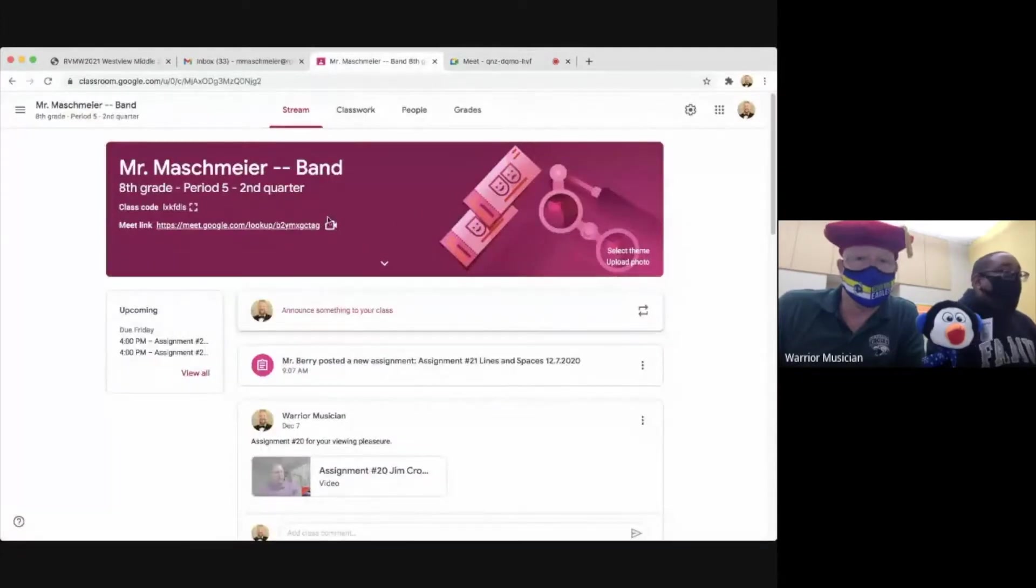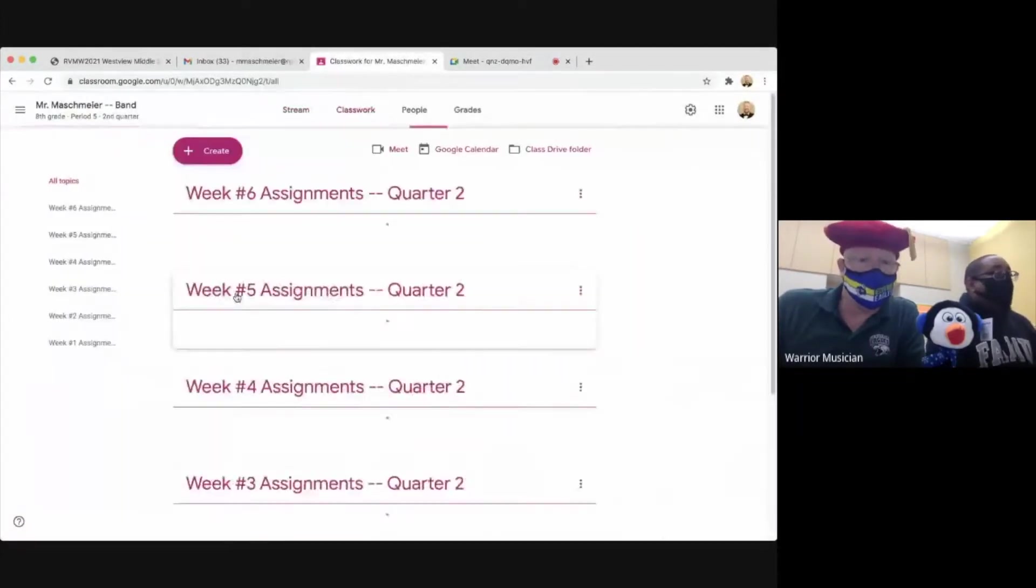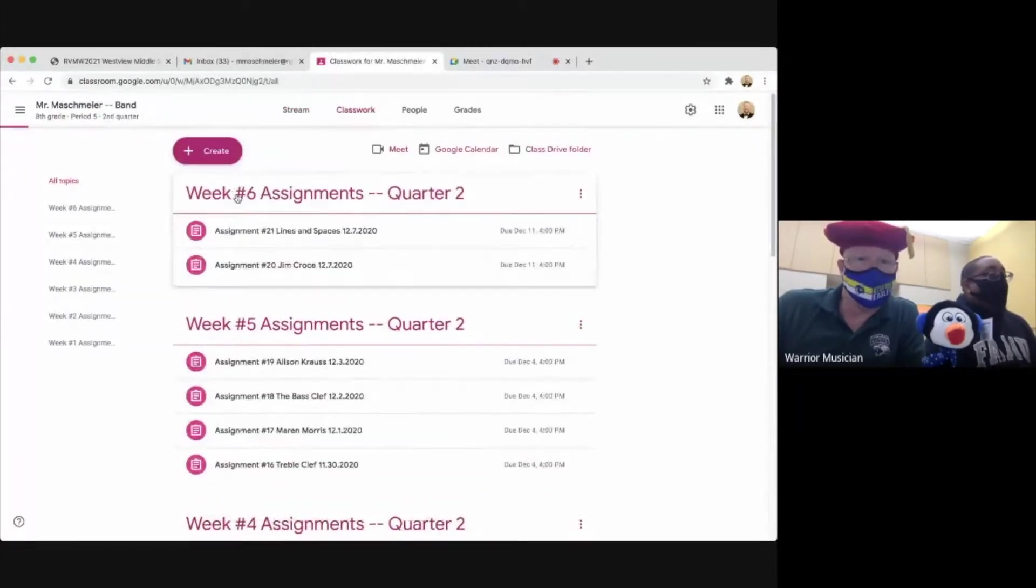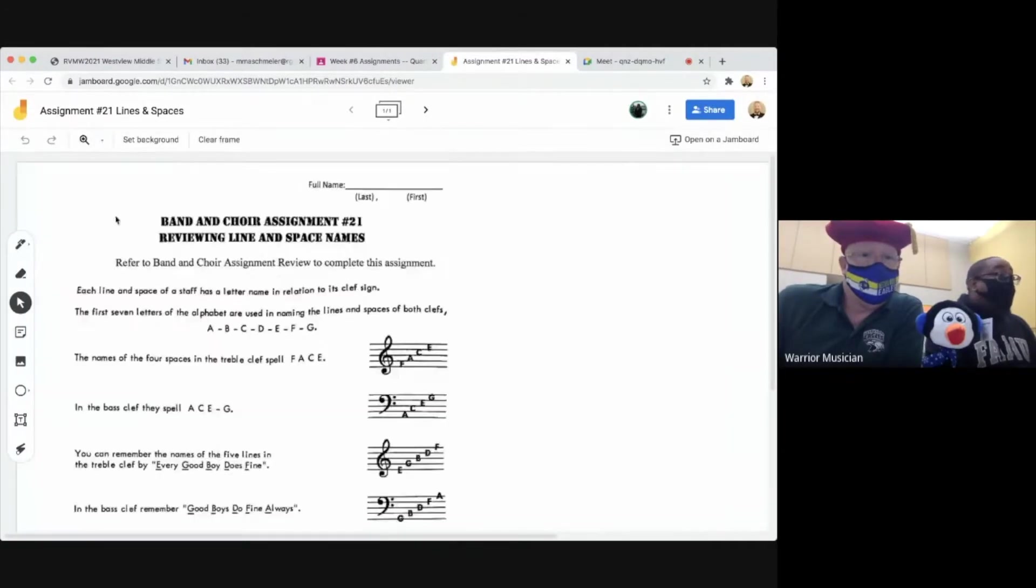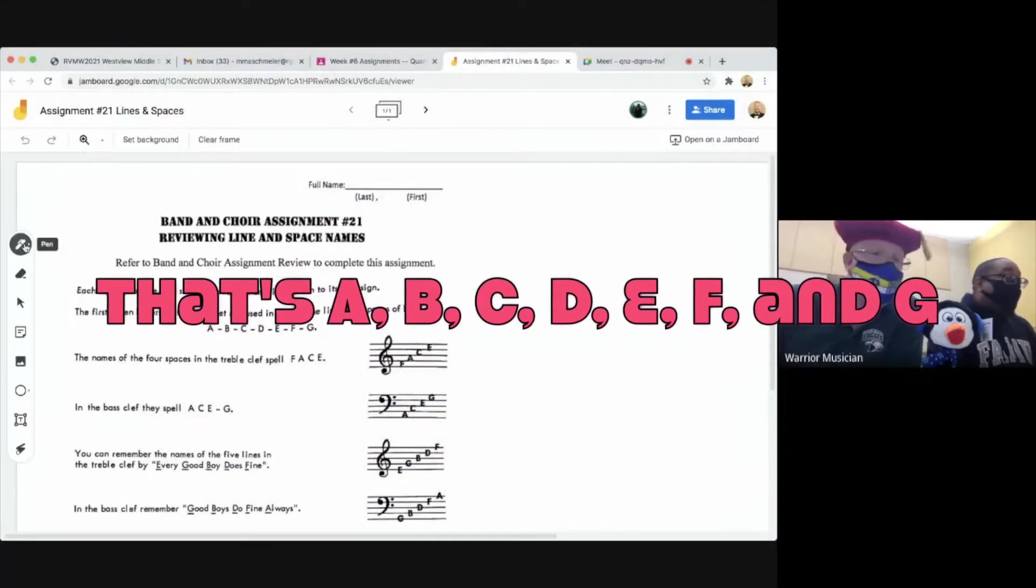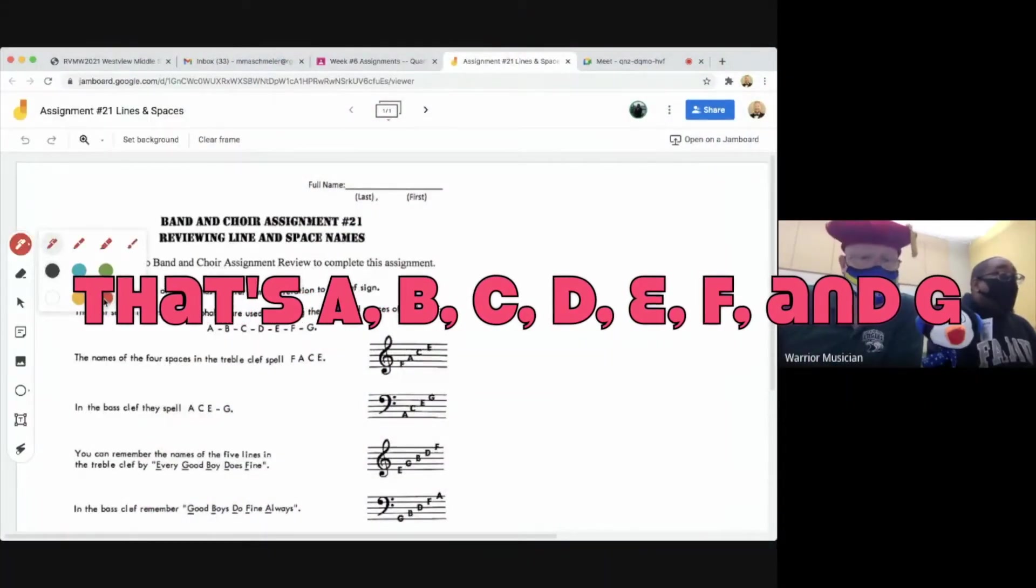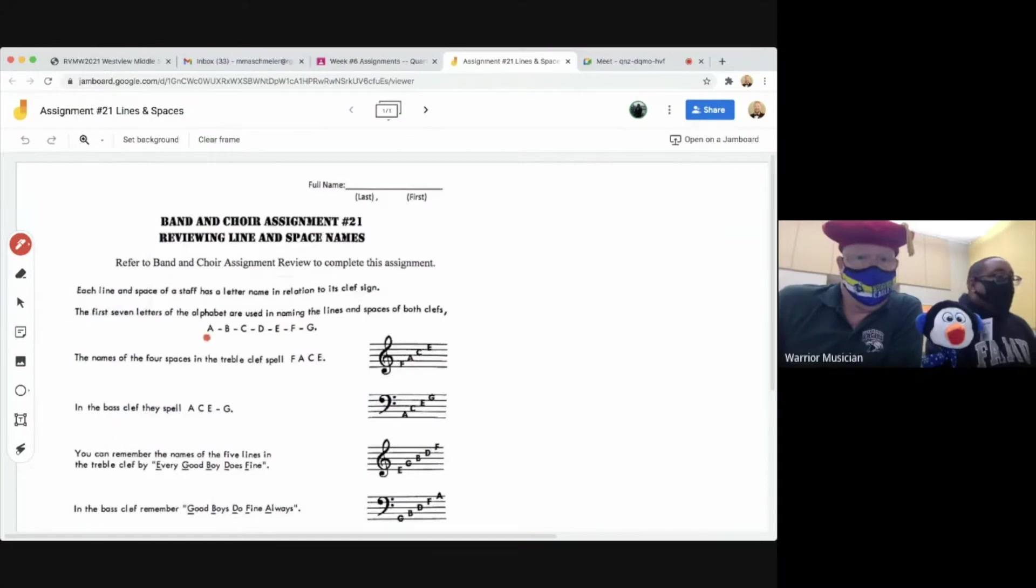So it says each line and space of the staff has a letter name in relation to its clef sign. The first seven letters of the alphabet are used in naming the lines and spaces. That would be these right here. Of both clefs.